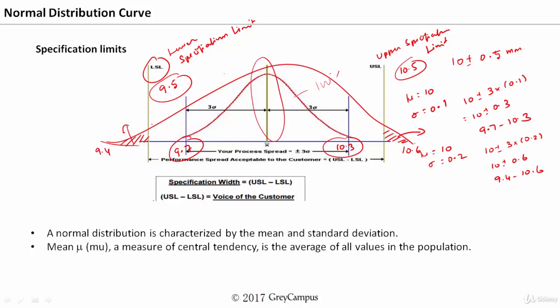We will learn more about this whenever you are calculating the process capability — this is actually very important to know at this point of time. Whenever you go to calculate the process capability, the learnings from today will be very useful. You need to understand that whenever you know the mean and standard deviation, you can predict the total spread of the entire population — 100% of the data will lie between mu plus or minus 3 sigma.